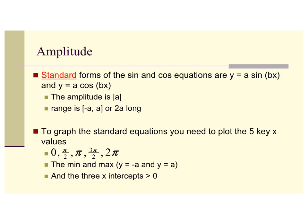Your amplitude is shown in standard form — it's multiplying the entire function, the sine or the cosine. Amplitude is always a positive number. If we have a negative, it rotates the graph, but the amplitude is the positive answer. Notice that our range is from negative A to A, giving us a delta of 2A. To graph the standard equation, you need to plot your five key points: plot your min and max and the three x-intercepts.